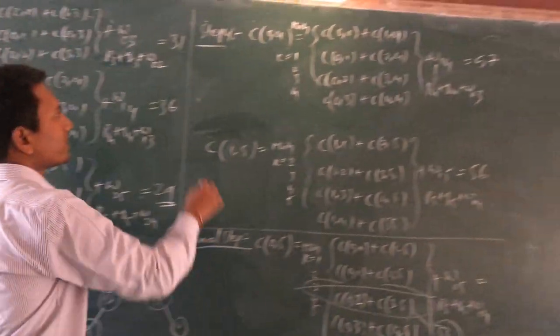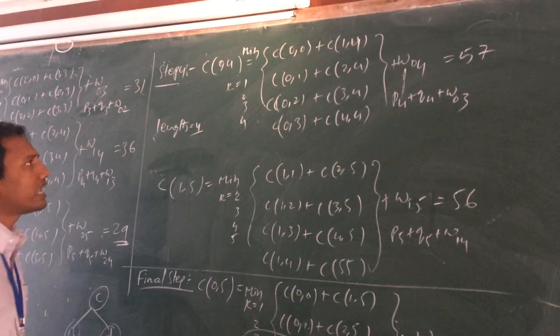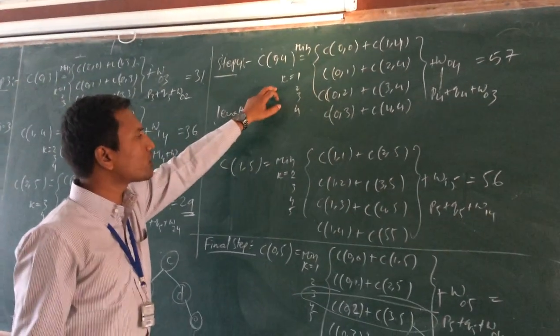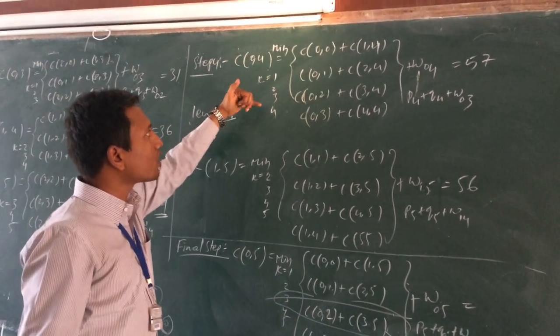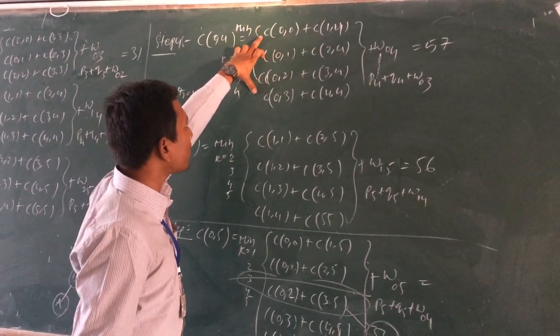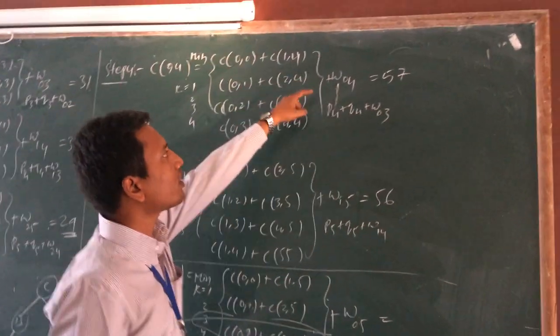Step 4, we are going to take length equal to 4. So for length 4, we have to find 0 to 4. We have to find the root possibilities. Here we have to find the root possibilities: 1, 2, 3, 4. Every root is the root. In these 4 values, we have to find the minimum value, weight of 0 to 4.